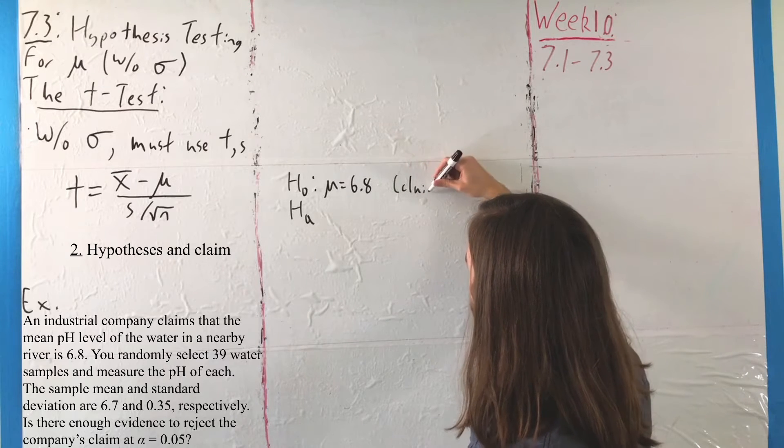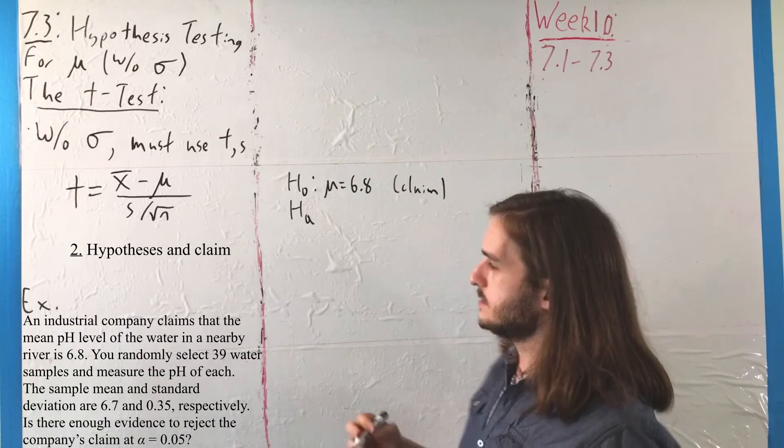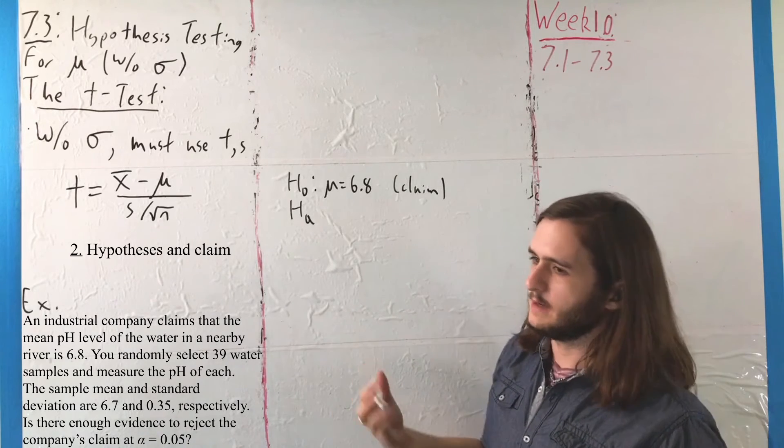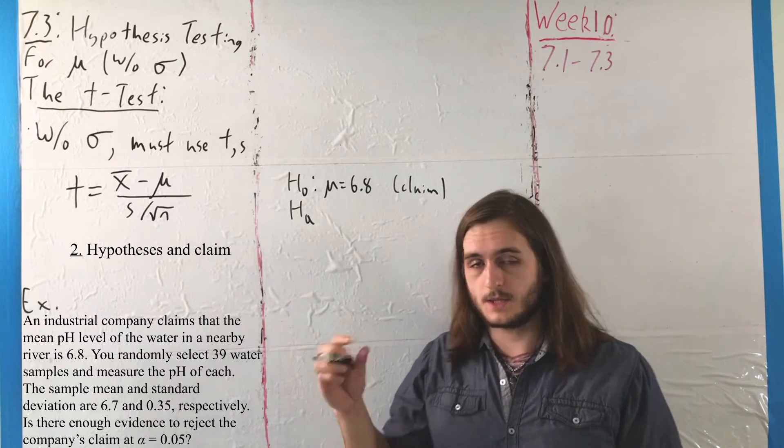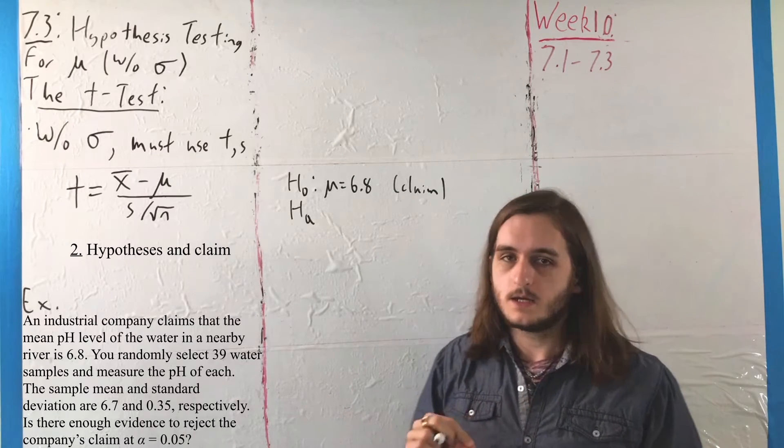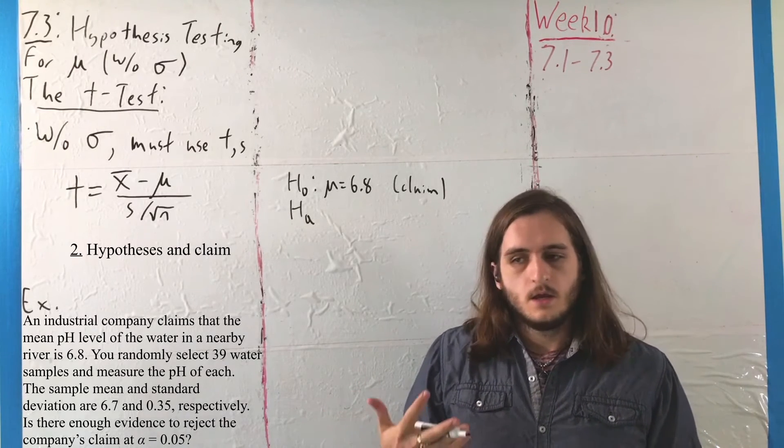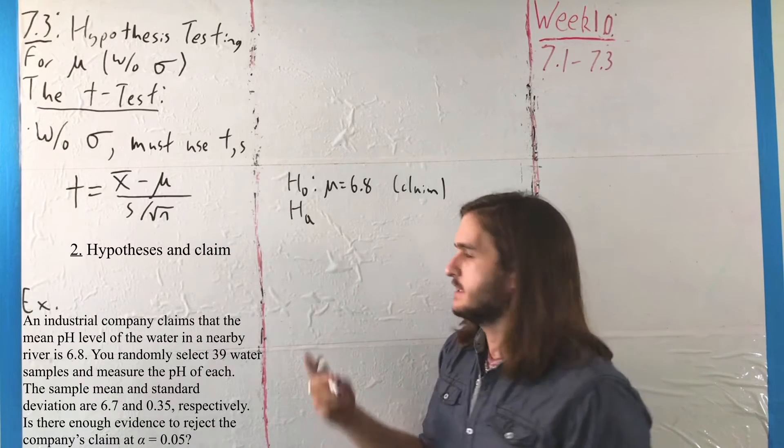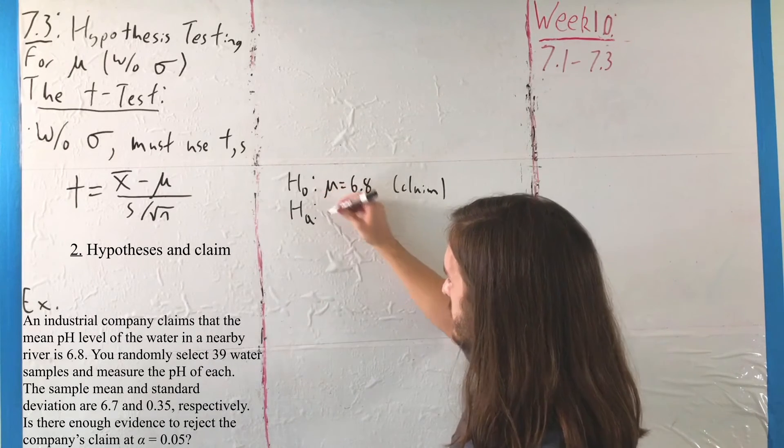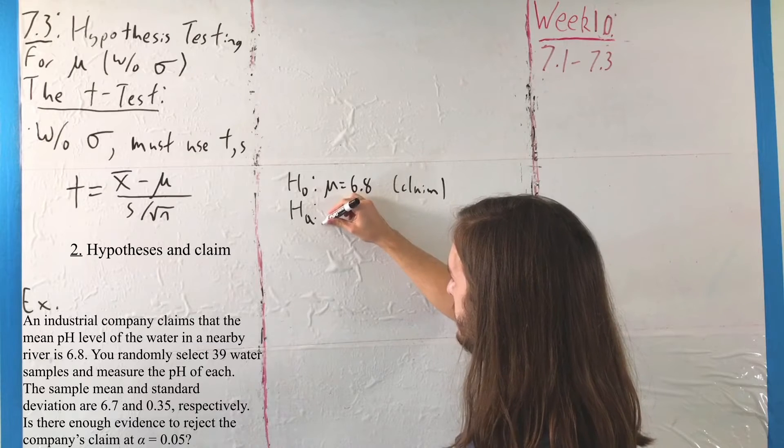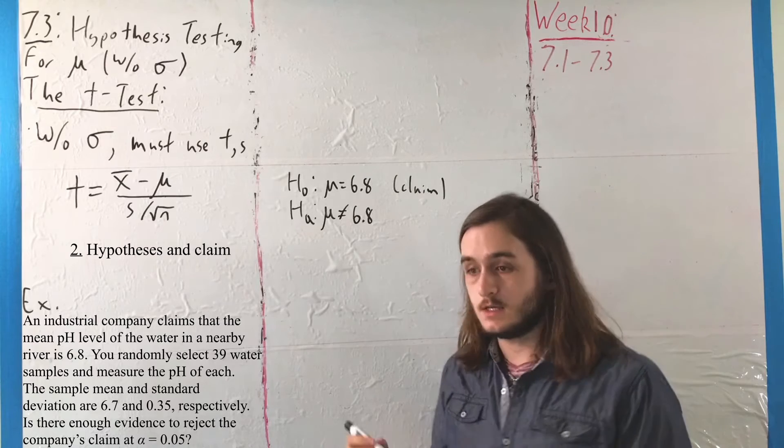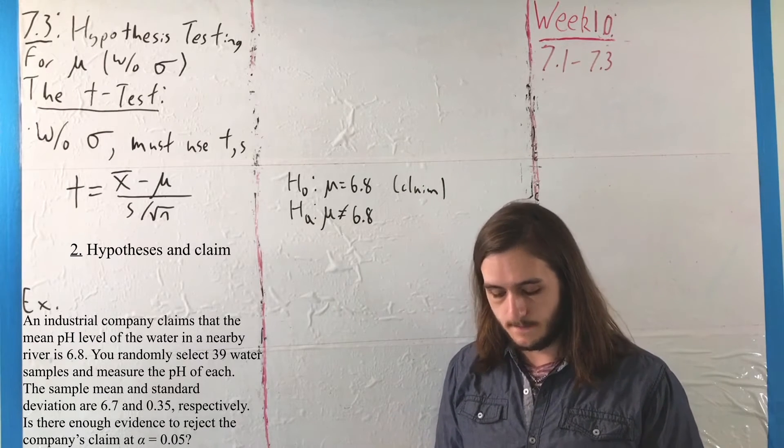So our claim lands in the null hypothesis, and we always do build this around the claim. At least, I think that's the easiest way to do it, where you get the claim and then you find its complement to get whether it's the alternative or null. Which means that because our claim is equality, our alternative hypothesis here will be anything else. That is, that our mean is not 6.8.